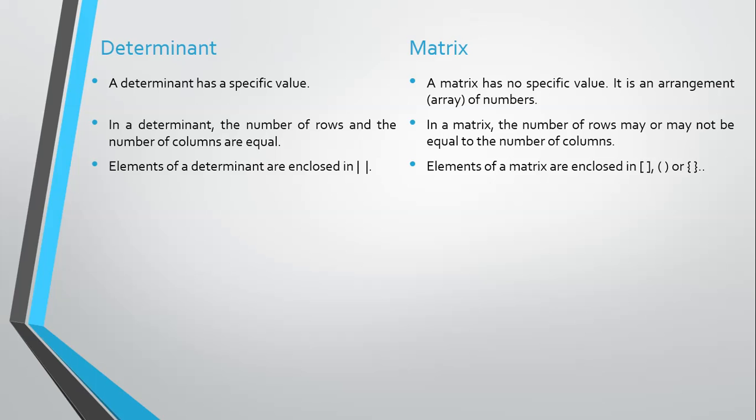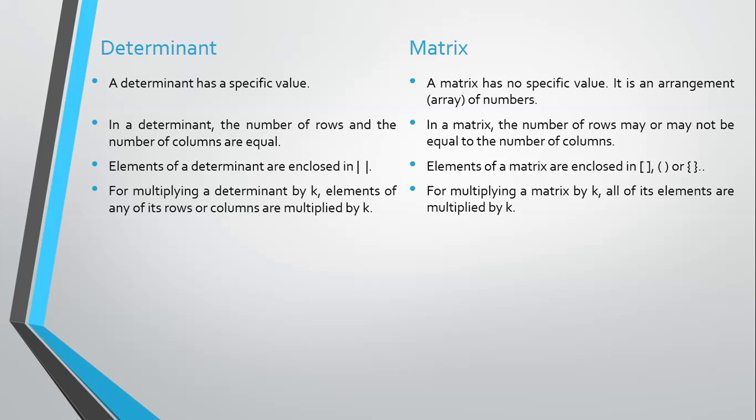For multiplying a determinant by k, elements of any of its rows or columns are multiplied by k. For multiplying a matrix by k, all of its elements are multiplied by k.